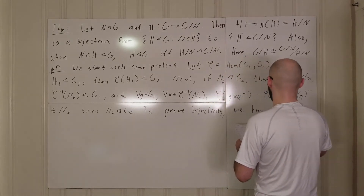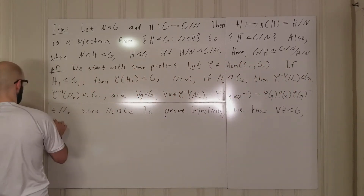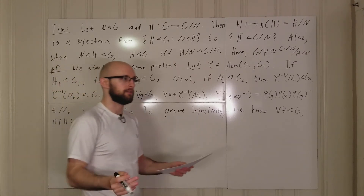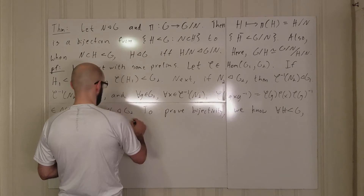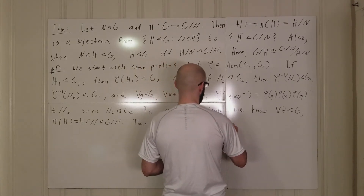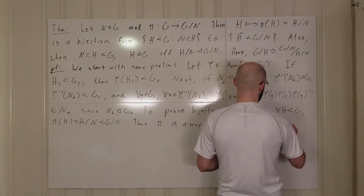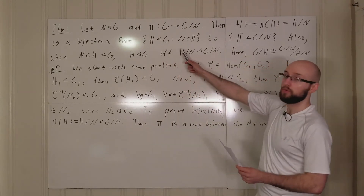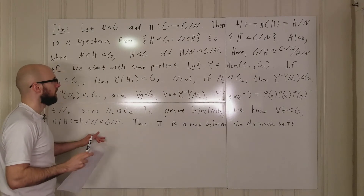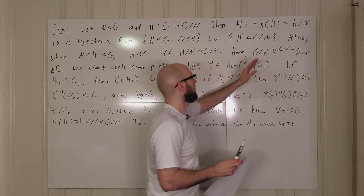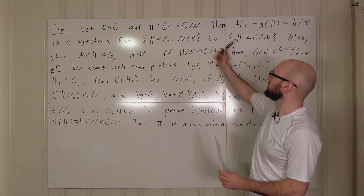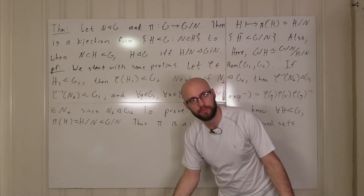For all H in G, if we look at π(H) = H mod N, this is going to be a subgroup of G mod N because it's the image under a group homomorphism of a subgroup. Thus π is a map between the desired sets — if we take a subgroup of G containing N, applying π gives a subgroup of G mod N. So this map maps this set into this set; now we just need to prove it's bijective.